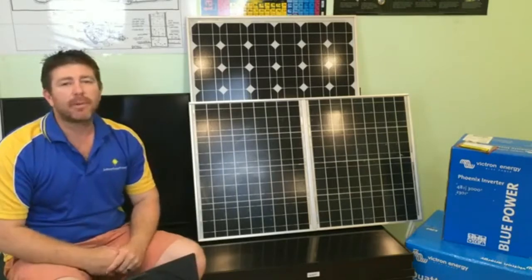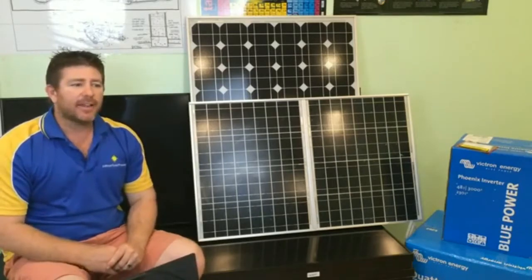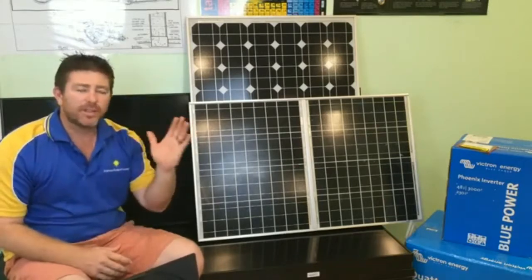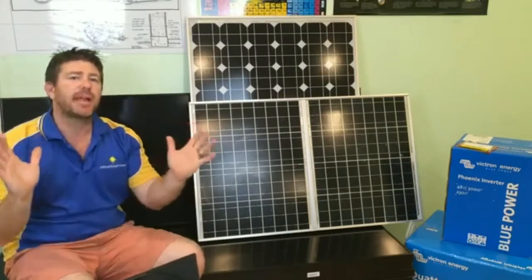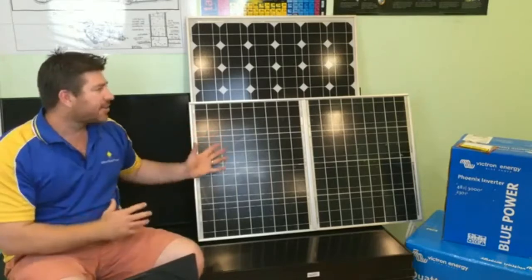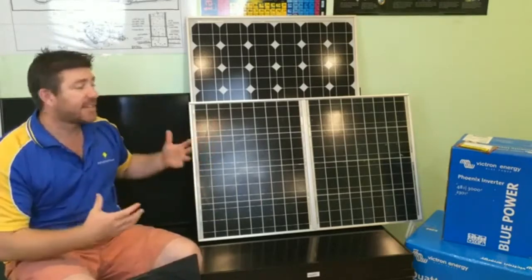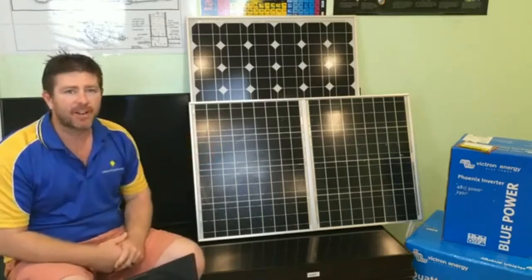Basically when they talk about efficiency, they're attempting to recreate the autumn equinox and spring equinox. In the factories they recreate what spring equinox and autumn equinox is, and that's how they test panels to their efficiency in a factory.